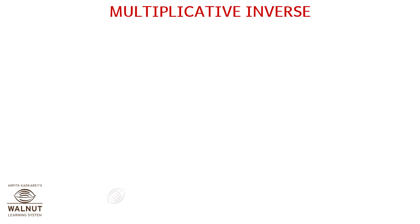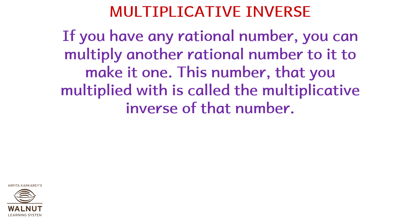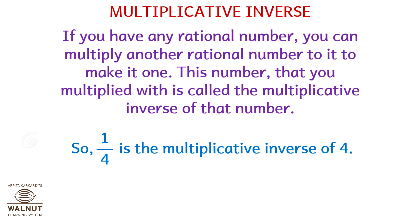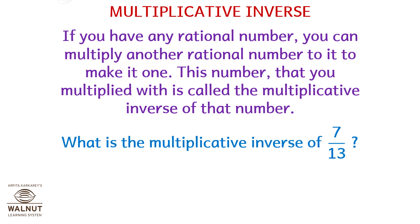Now let's look at Multiplicative Inverse. If you have any rational number, you can multiply another rational number to it to make it 1. This number that you multiplied with is called the Multiplicative Inverse of that number. For example, if you have the number 4, you can multiply it by 1 upon 4 to make it 1. So 1 upon 4 is the Multiplicative Inverse of 4. What is the Multiplicative Inverse of 7 by 13? It is 13 by 7.